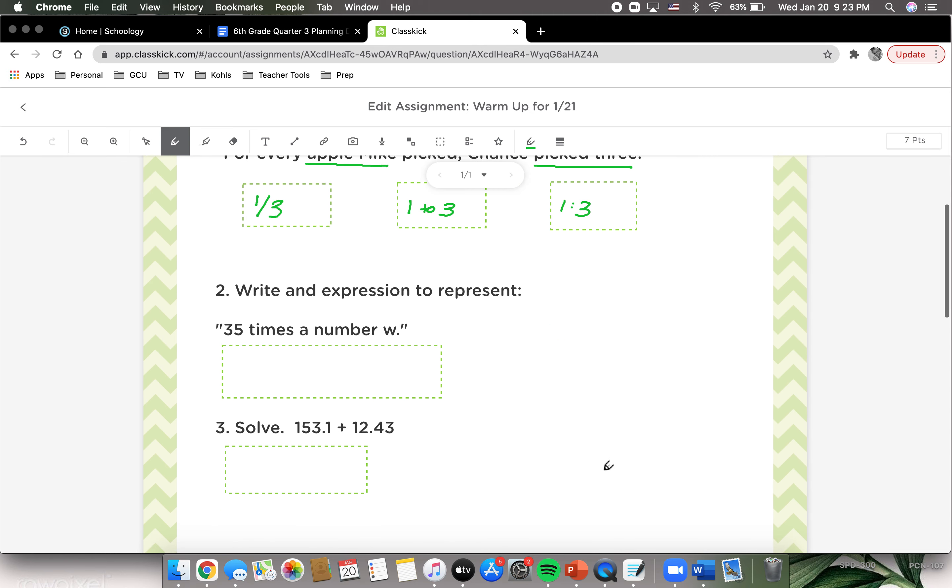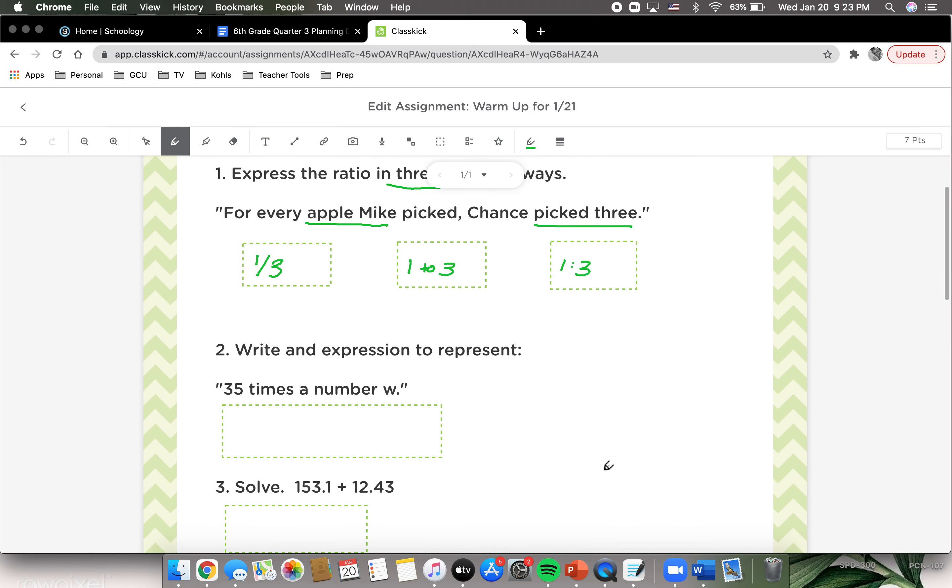Looking at number two, it says write the expression to represent 35 times a number W. So we can write 35W, meaning that we're multiplying 35 times whatever number W is.